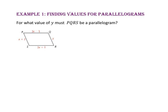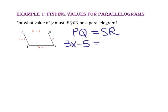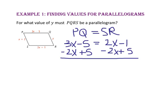In example 1, we will find values for parallelograms. For what value of Y must quadrilateral PQRS be a parallelogram? Since they give us side lengths, we are going to use the property of the sides of the parallelogram. We know a quadrilateral is a parallelogram if both pairs of opposite sides are congruent. So, let's start by finding X by setting the length of segment PQ equal to the length of segment SR. We substitute 3X minus 5 for PQ and 2X plus 1 for SR. We subtract 2X from both sides and add 5 to both sides, so X equals 4.